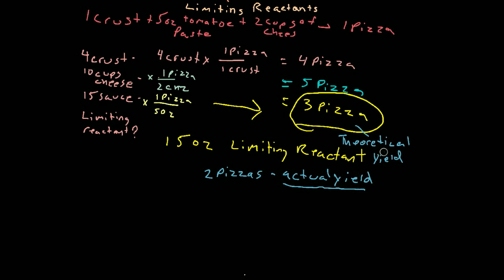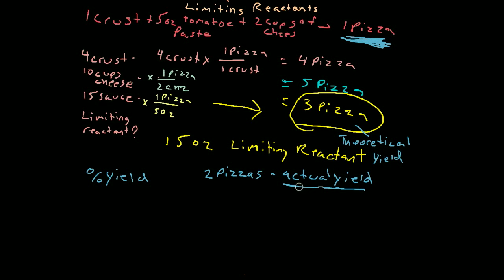Once we have the actual yield and the theoretical yield, we can calculate something called percent yield. In chemistry, percent yield means you've taken a balanced equation, done the experiment in the lab, figured out in theory how much of a compound that reaction can produce, and then recorded what you actually produced. Then you see how close to perfection you were.